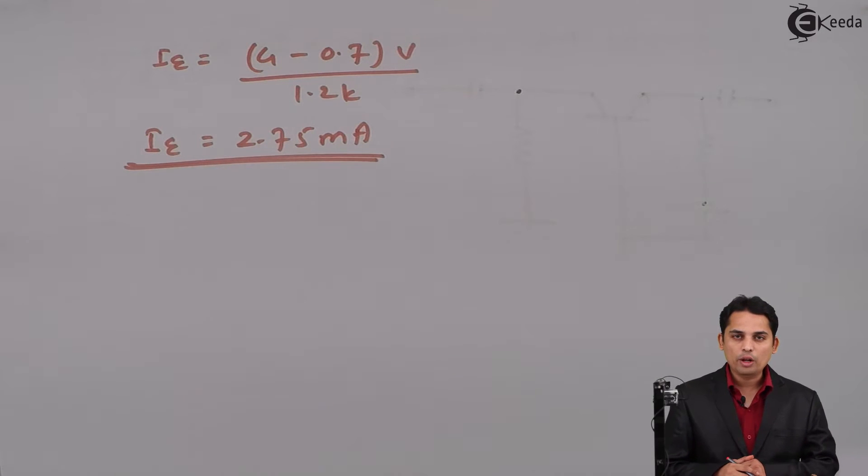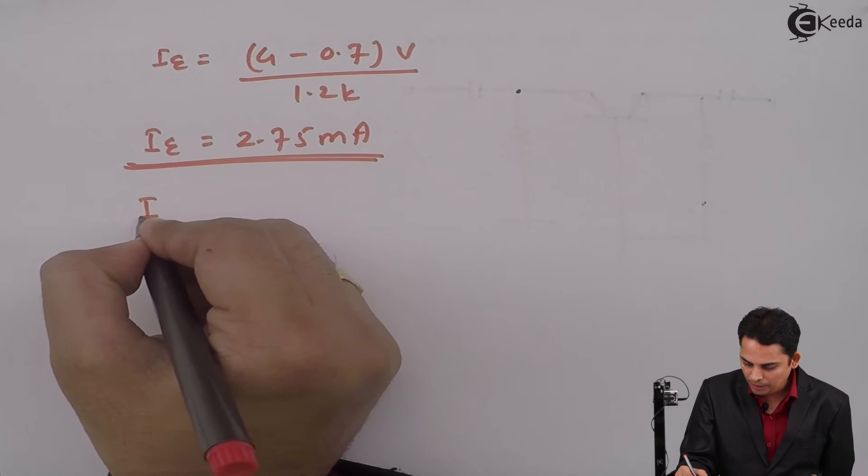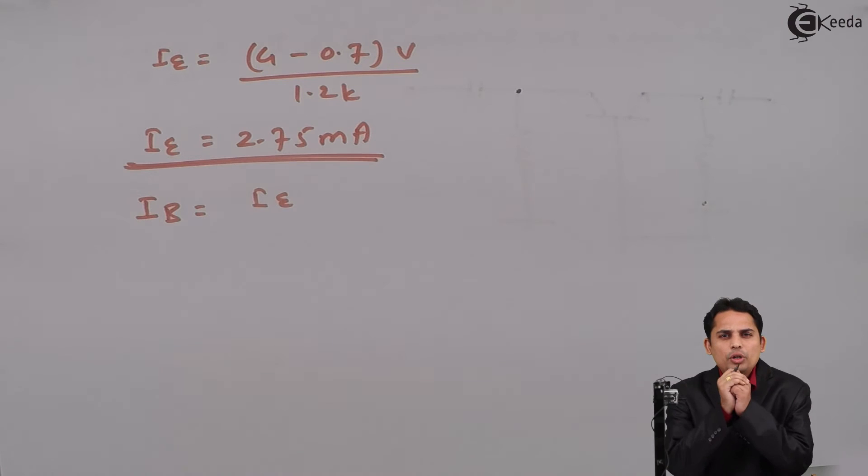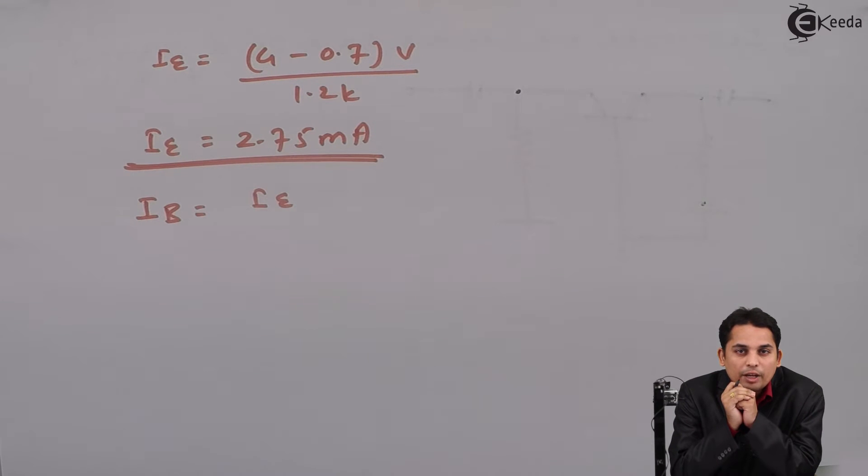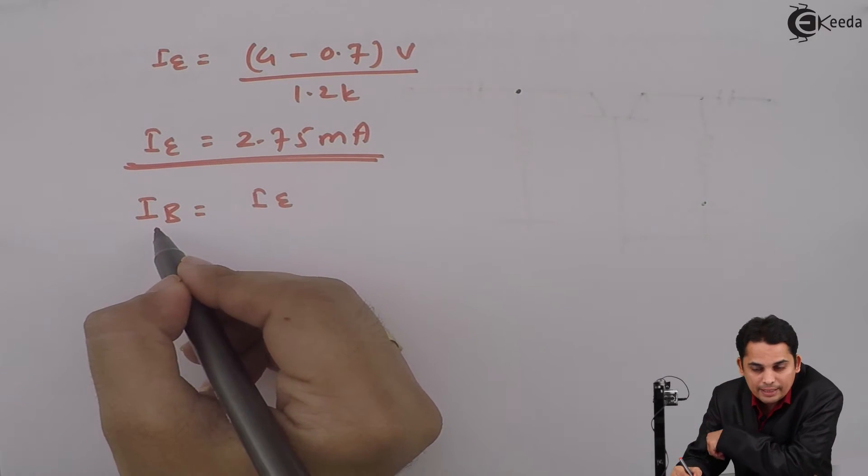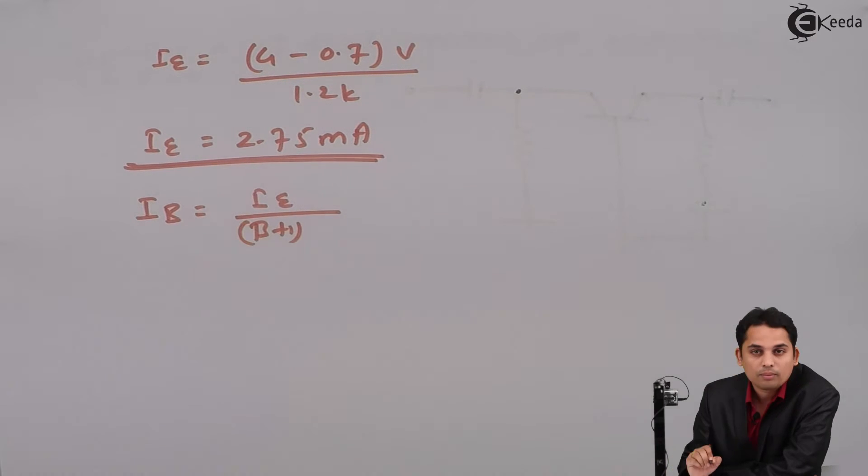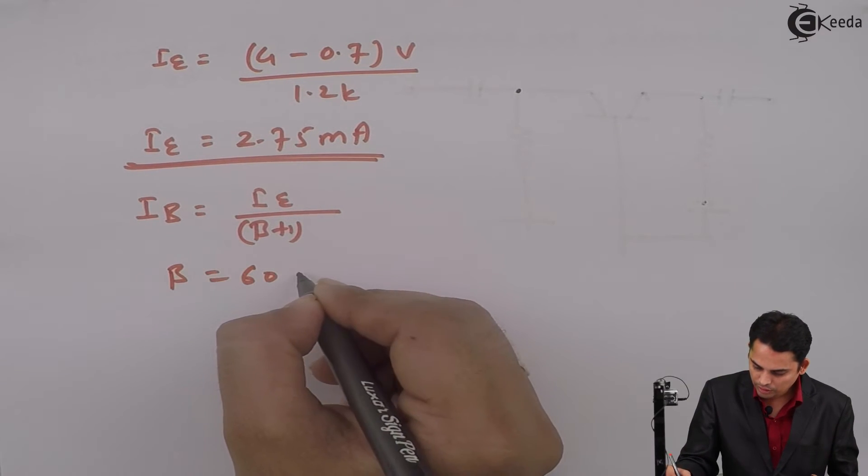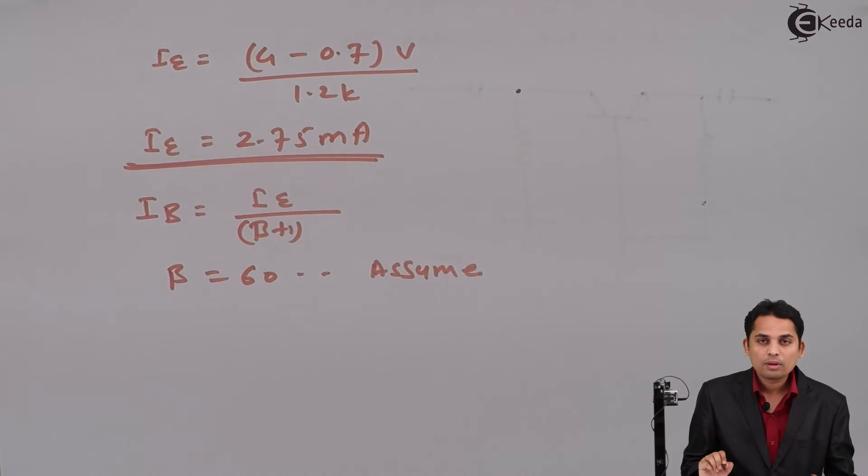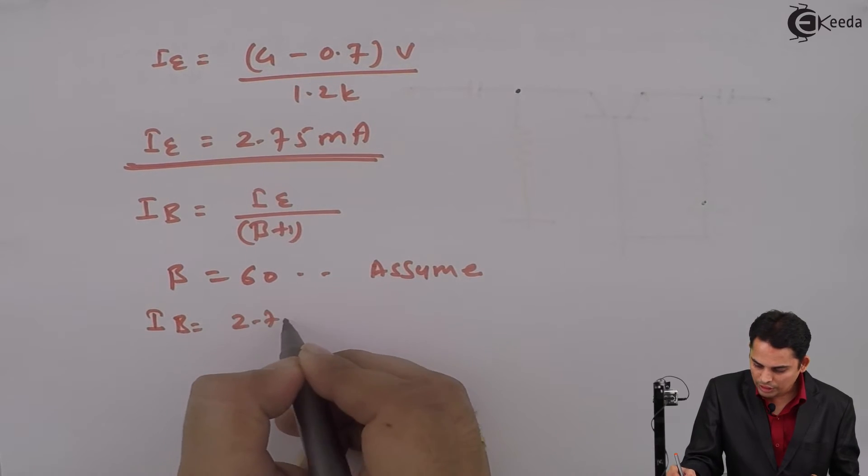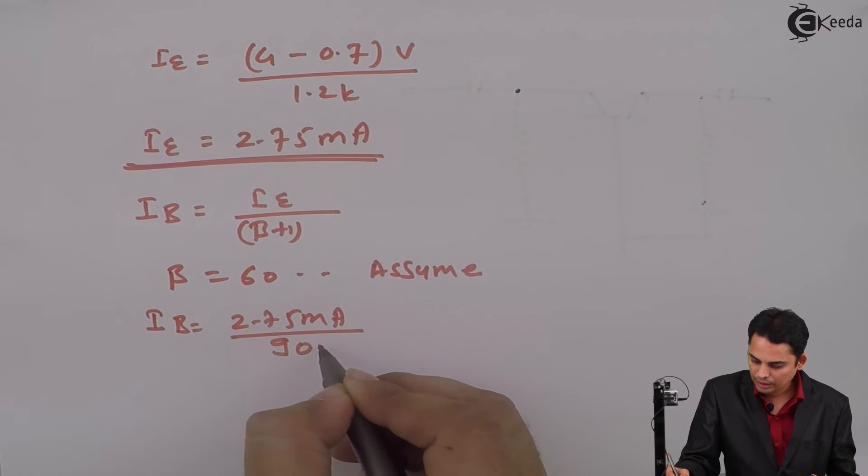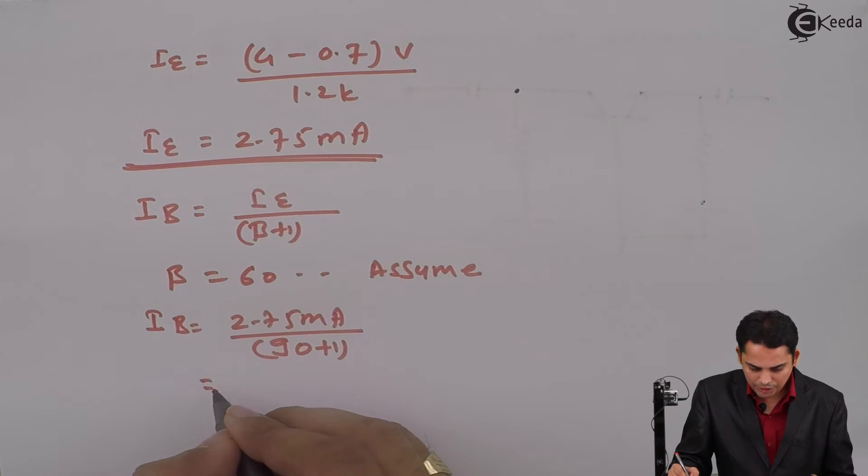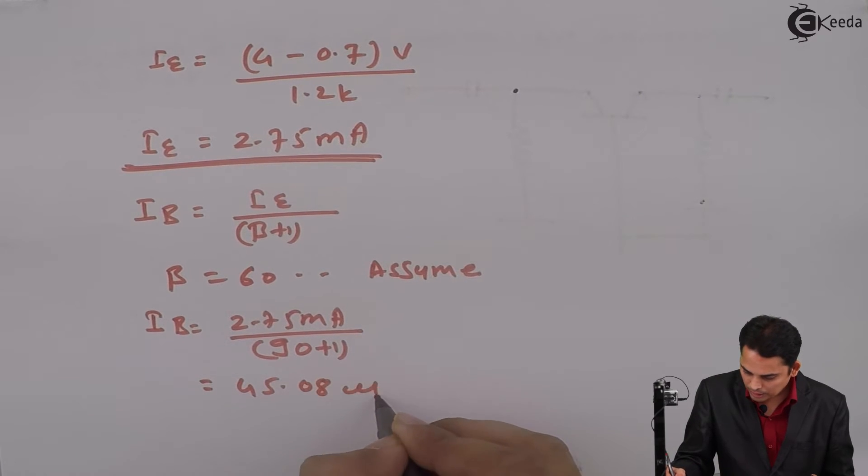In the same step, we can find out value of base current IB. We know that base current IB is equal to IE. We know that IE is equal to beta plus 1 times IB. Hence, IB can be written as IE divided by beta plus 1. For this particular problem, we will assume that beta is equal to 90. Hence, IB is equal to 2.75 milliampere divided by 90 plus 1. So value of base current IB is equal to 45.08 microampere.